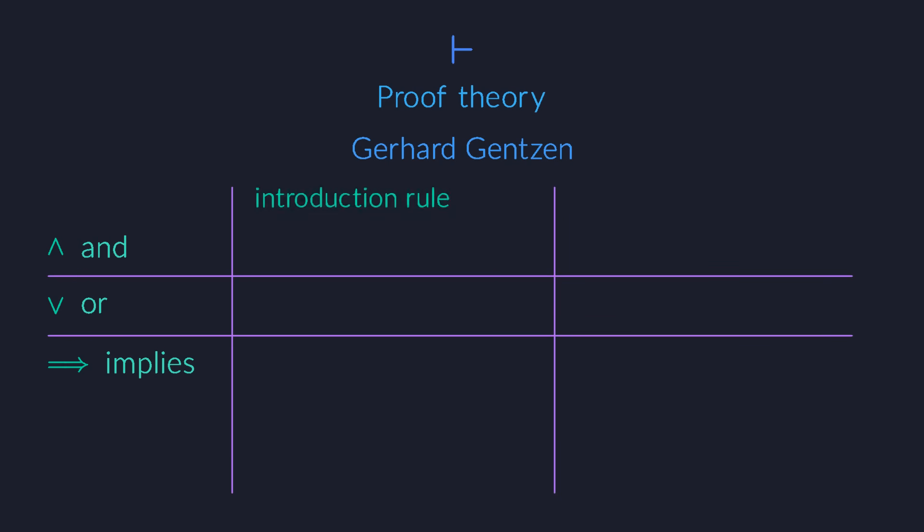An introduction rule, which tells us how to introduce the operator into a sentence, and an elimination rule, which tells us how to get rid of the operator. For example, the implication operator, the left-right arrow that you see in so many mathematical proofs, can be eliminated like this.